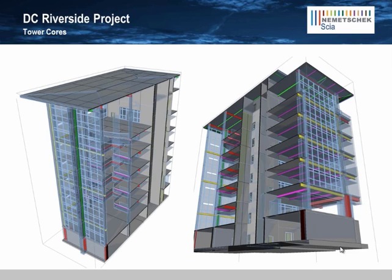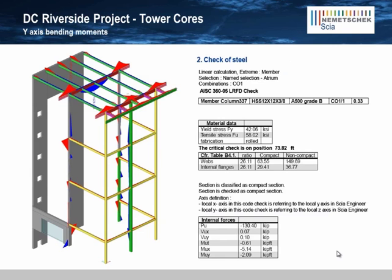The tower housed the building's mechanical systems and service cores, as well as a six-story open atrium that was an important architectural design element. You can see the bending moments on the tower atrium steel frame, and we can see these results graphically on the physical structural model.